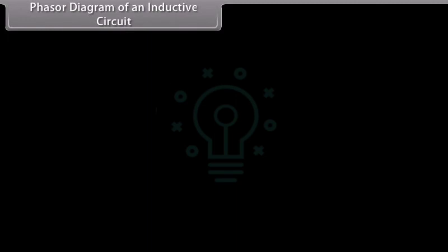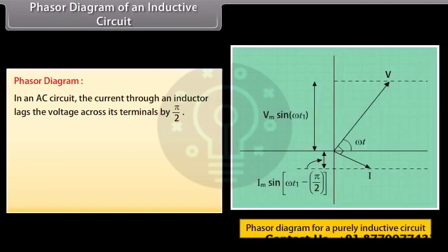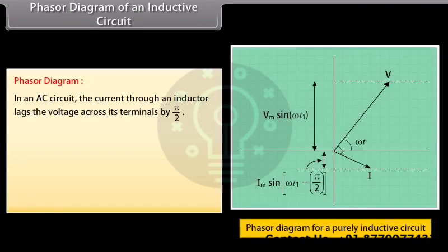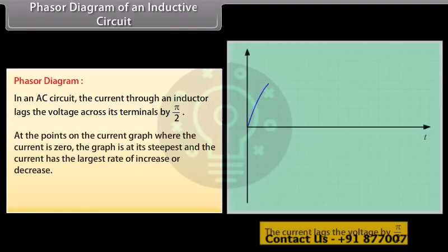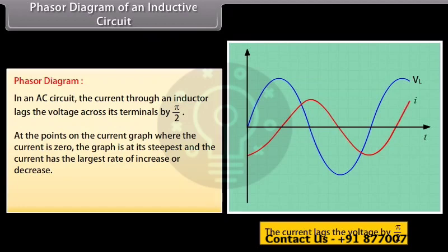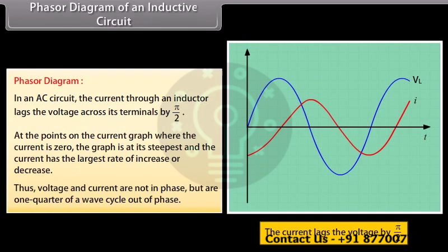Phasor diagram of an inductive circuit: in an AC circuit, the current through an inductor lags the voltage across its terminals by π/2. At points on the current graph where the current is zero, the graph is at its steepest and the current has the largest rate of increase or decrease. Thus, voltage and current are not in phase but are one quarter of a wave cycle out of phase.